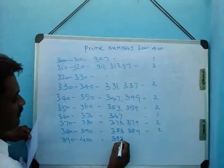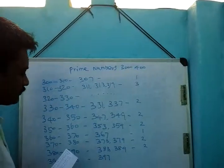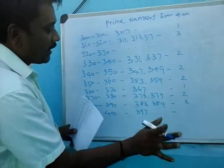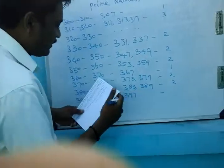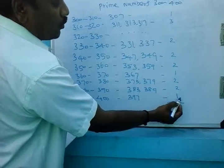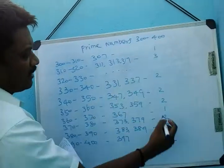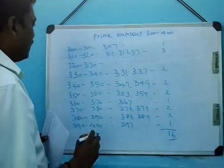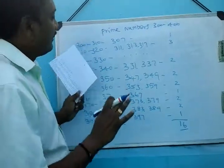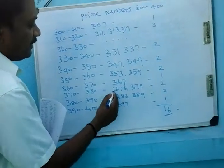390 to 400: there is only one prime number — 397. Students must keep in mind: 337, 383, 389, 397. In your division methods these are most useful. Totally there are sixteen prime numbers between 300 and 400.